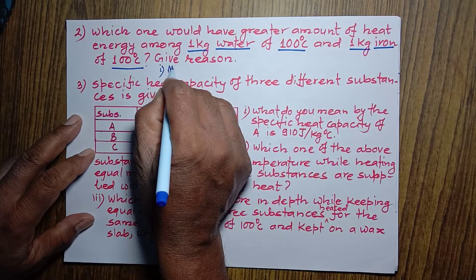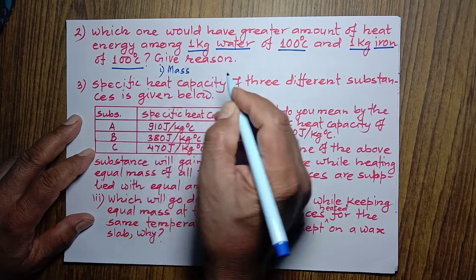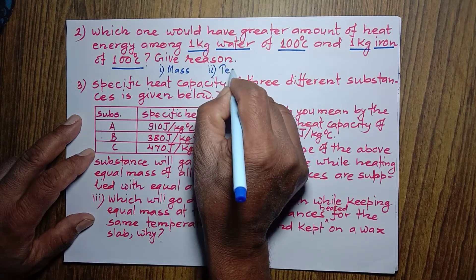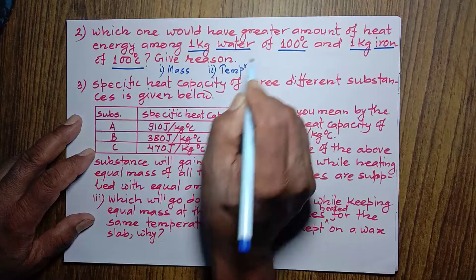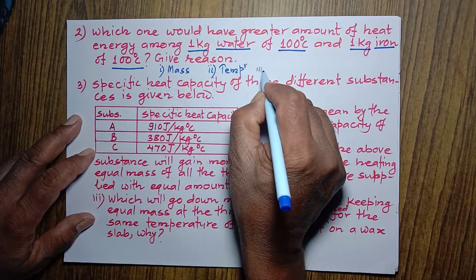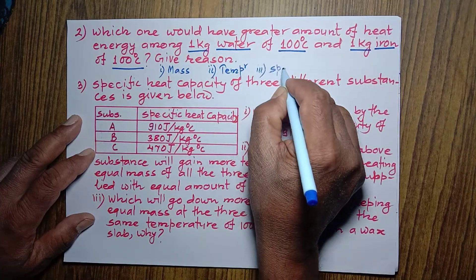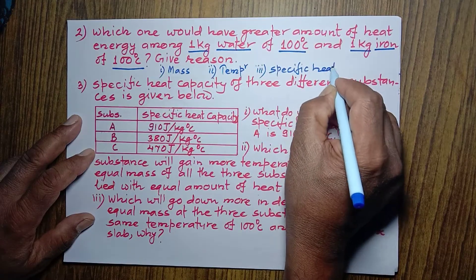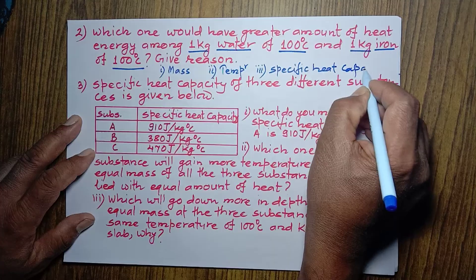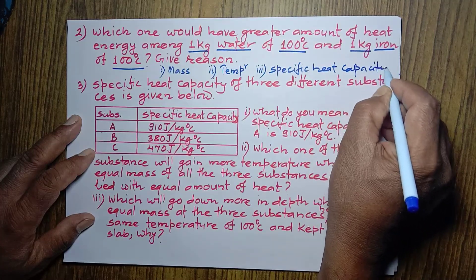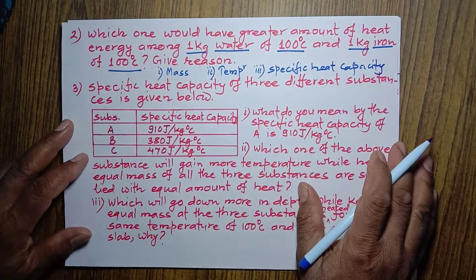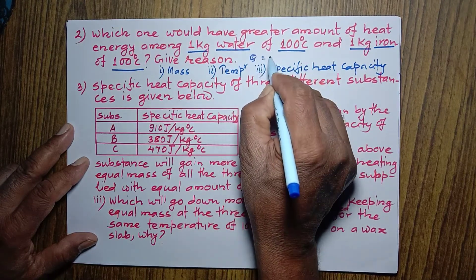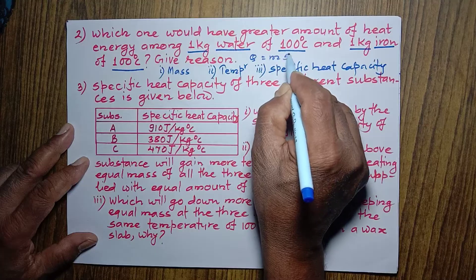Number one: mass of the body. Number two: temperature of the body. And number three: specific heat capacity of the body. According to the heat equation, quantity of heat contained in a body depends upon Q = mst — mass of the body, specific heat capacity of that body, and temperature of that body.